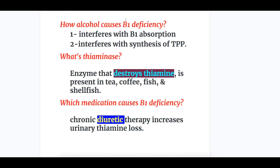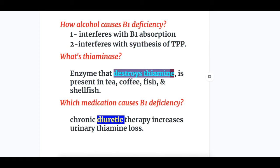How does alcohol cause B1 deficiency? Number one, it interferes with B1 absorption from the GIT. Number two, alcohol interferes with the synthesis of thiamine pyrophosphate. What is thiaminase? Thiaminase is an enzyme that destroys thiamine, and it is present in tea, coffee, fish, and shellfish.